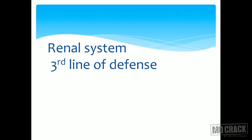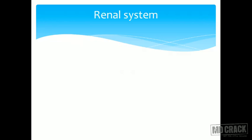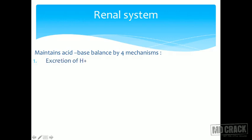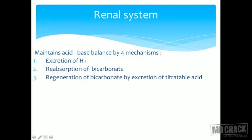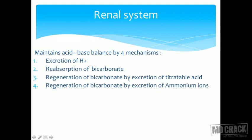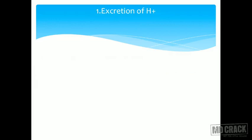The renal system is the third line of defense — the kidneys come into play as the 'vishwayanshah' of acid-base balance. The kidneys maintain acid-base balance by four mechanisms: (1) it excretes H+ (protons); (2) it reabsorbs bicarbonate; (3) regeneration of bicarbonate by excretion of titratable acid; (4) regeneration of bicarbonate by excretion of ammonium ions.